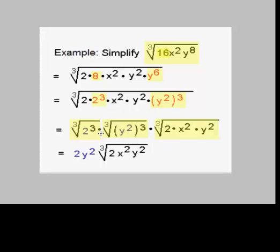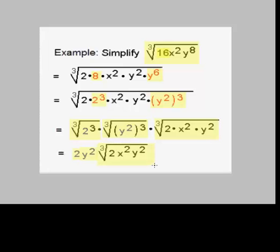Now these two perfect cubes simplify out. The cube root of 2 cubed turns into 2. The cube root of y squared quantity cubed turns into y squared. So we have 2y squared outside the radical, and then what's left is the cube root of 2x squared y squared.